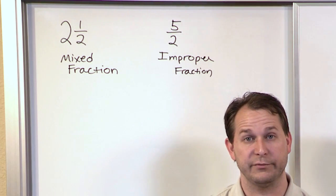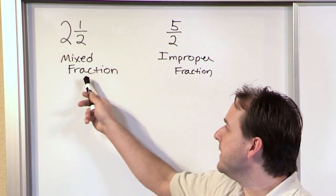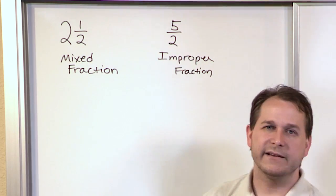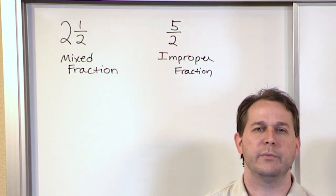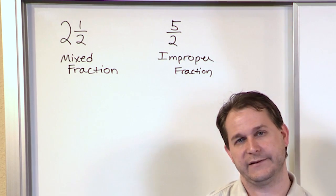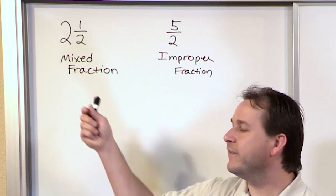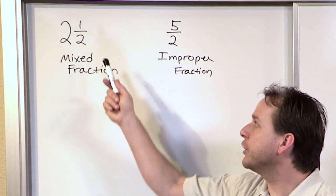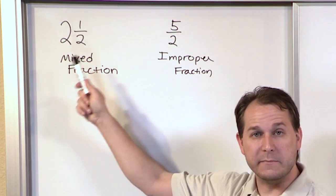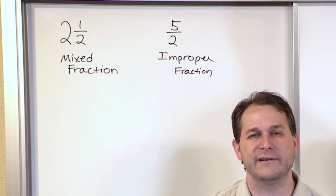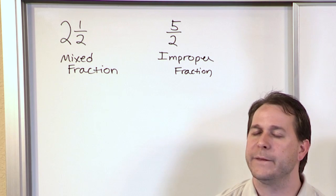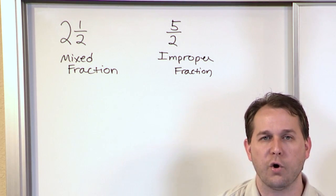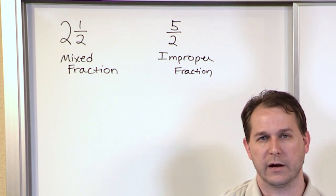The point is, mixed fractions written like this and improper fractions written like this both represent when we have more than one whole object. They're just different ways of writing the same thing. So you can convert back and forth between mixed fractions and improper fractions because they both represent the exact same thing — more than one whole object.